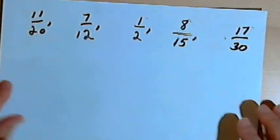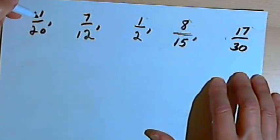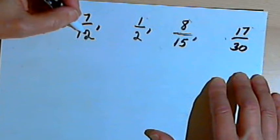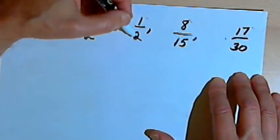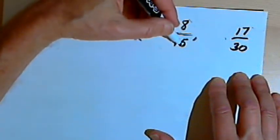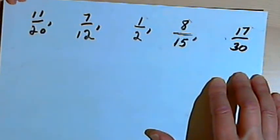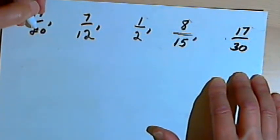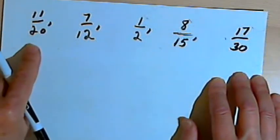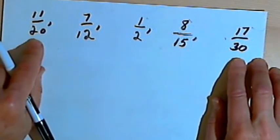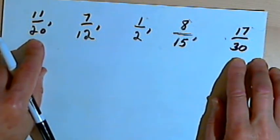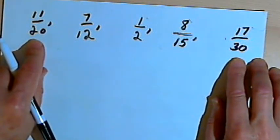So here once again I've got five fractions. They all have different denominators. There's 11 over 20, 7 over 12, 1 over 2, 8 over 15, and 17 over 30. Now what I'm going to have to do is give them all the same denominator so I can compare them. Looking at the denominators I have, I realize the smallest denominator I could give to all of them would be 60.